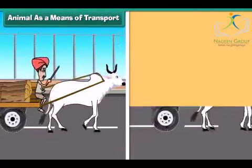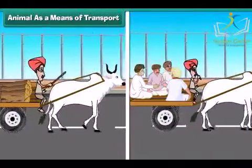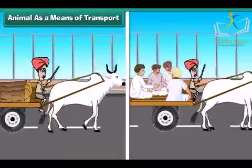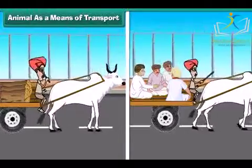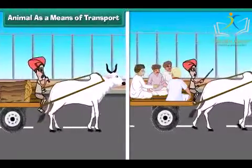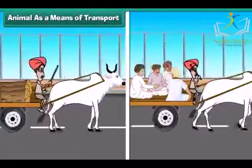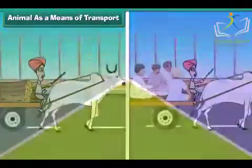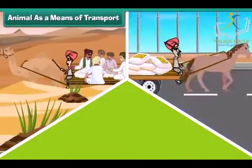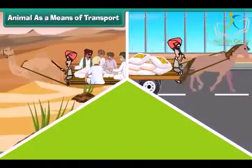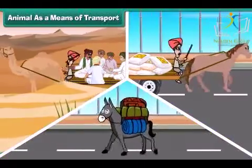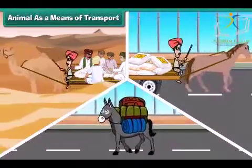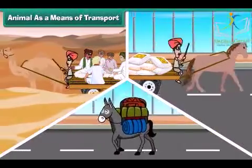Animal as a means of transport: animal-driven vehicles such as bullock carts are used to carry straw, crops and sometimes even people. Animals like camels, horses and donkeys carry goods and people, so animals play an important role in transport.